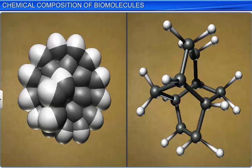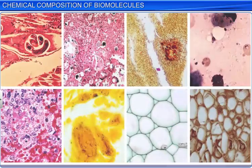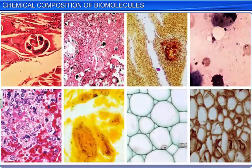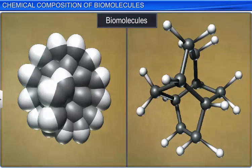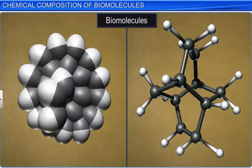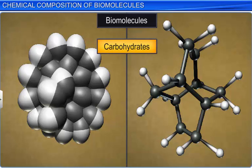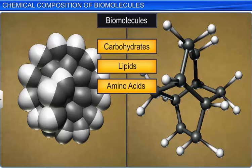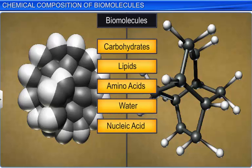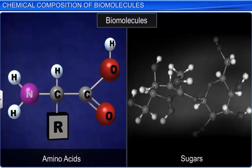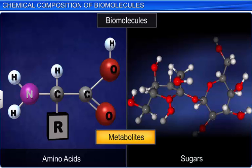All the carbon compounds we derive from living tissues are called biomolecules. For example, carbohydrates, lipids, amino acids, water, and nucleic acids. Biomolecules such as amino acids and sugars are also known as metabolites because they are intermediates and products of metabolism.